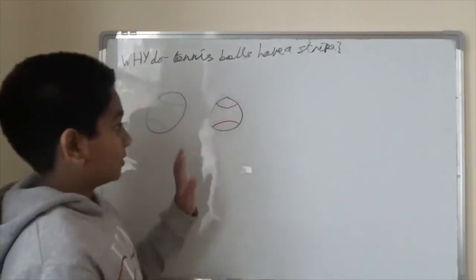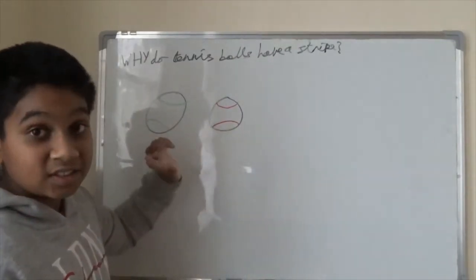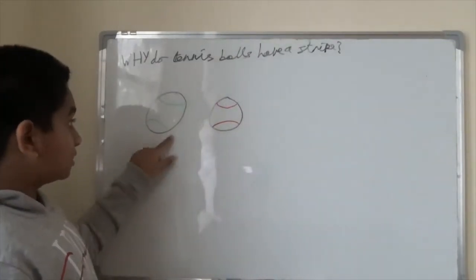A baseball has stitches. So that's why baseballs have stitches and tennis balls have the glue thing.